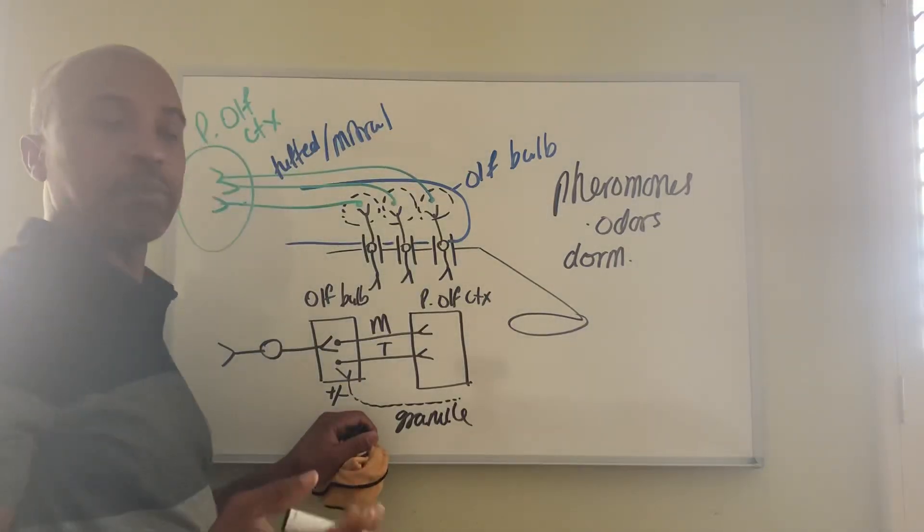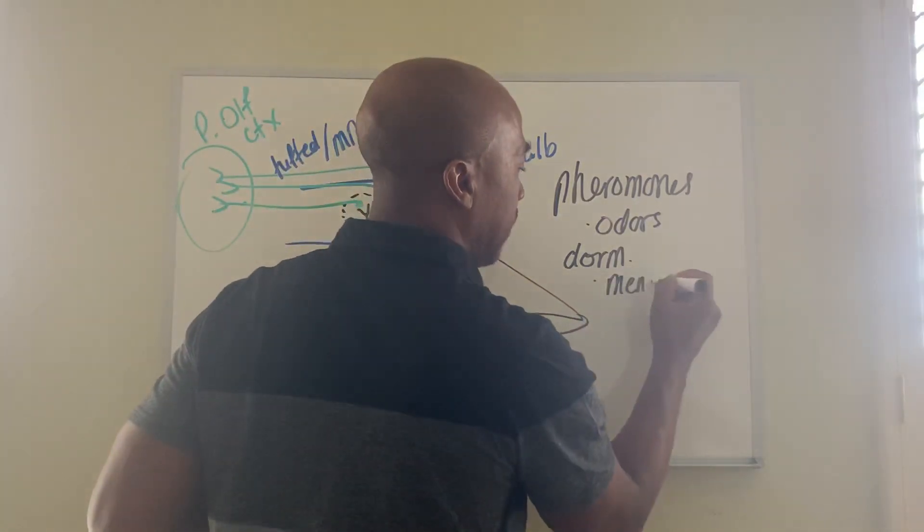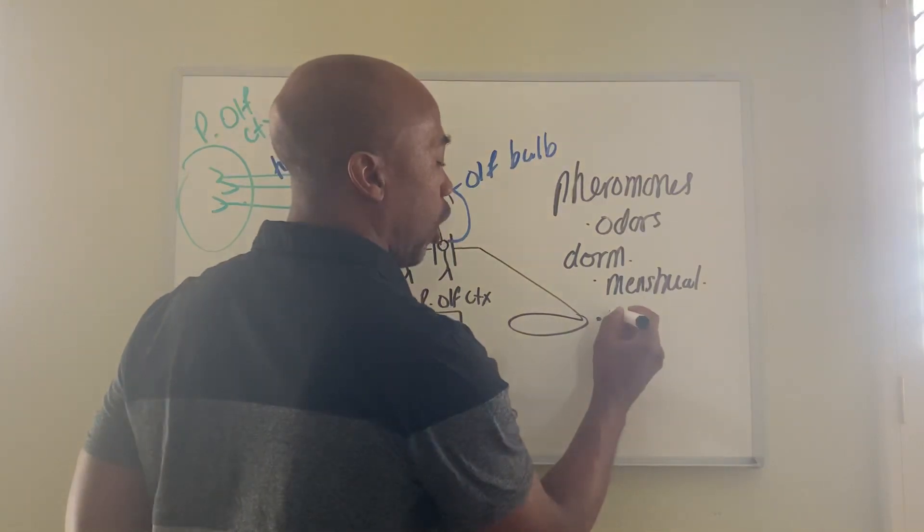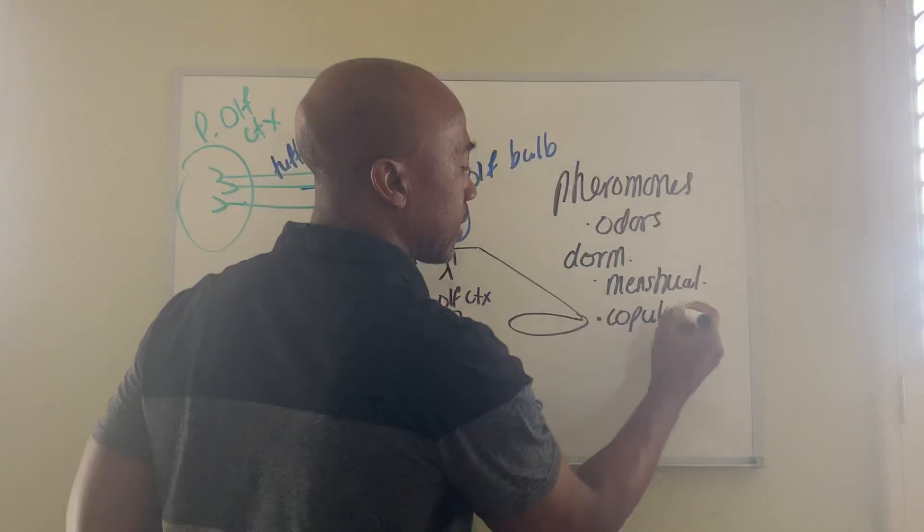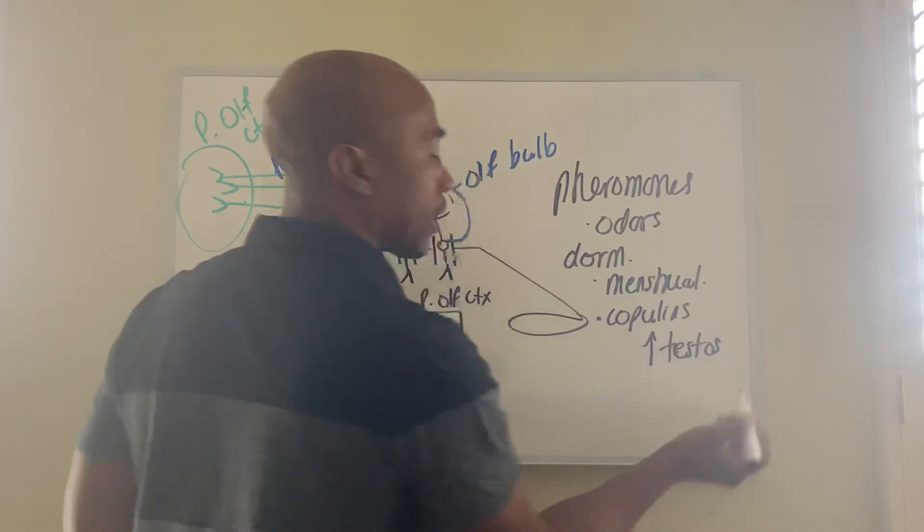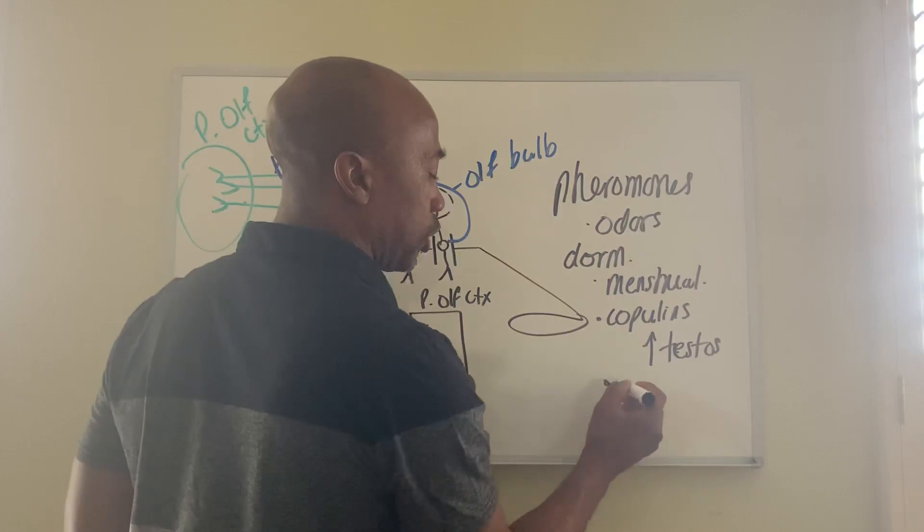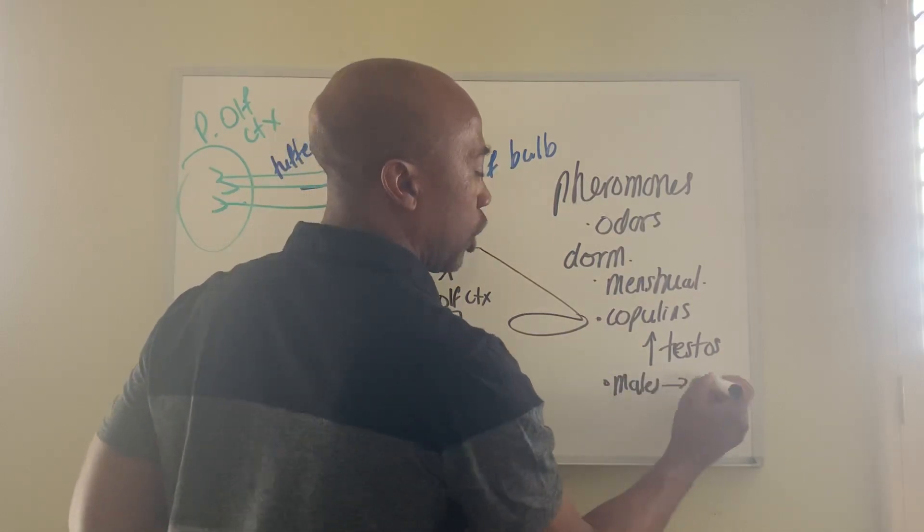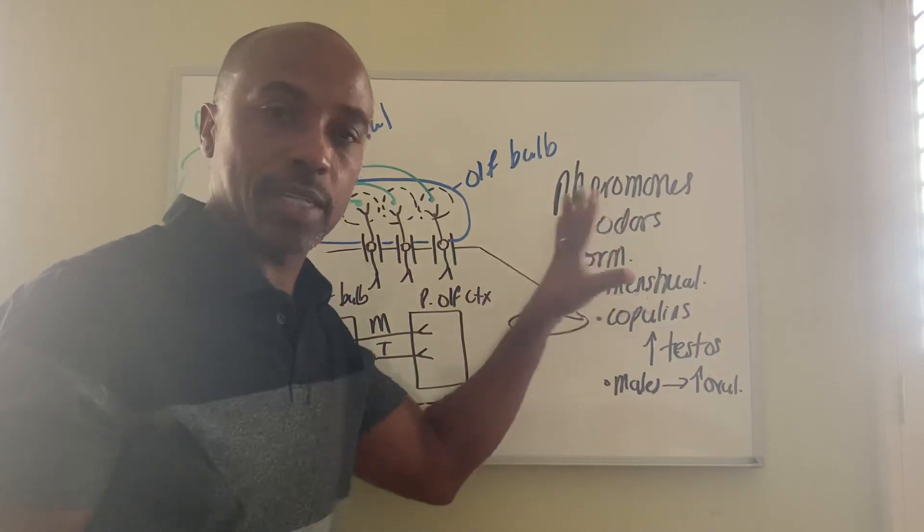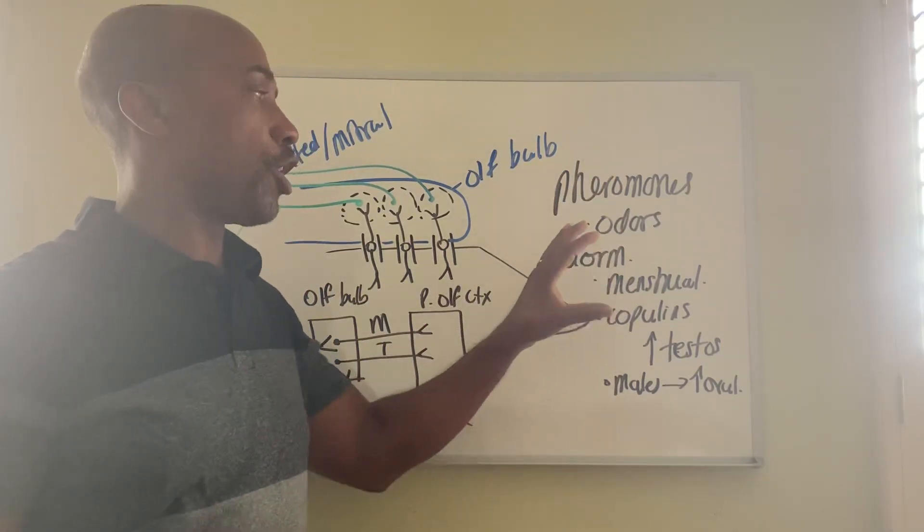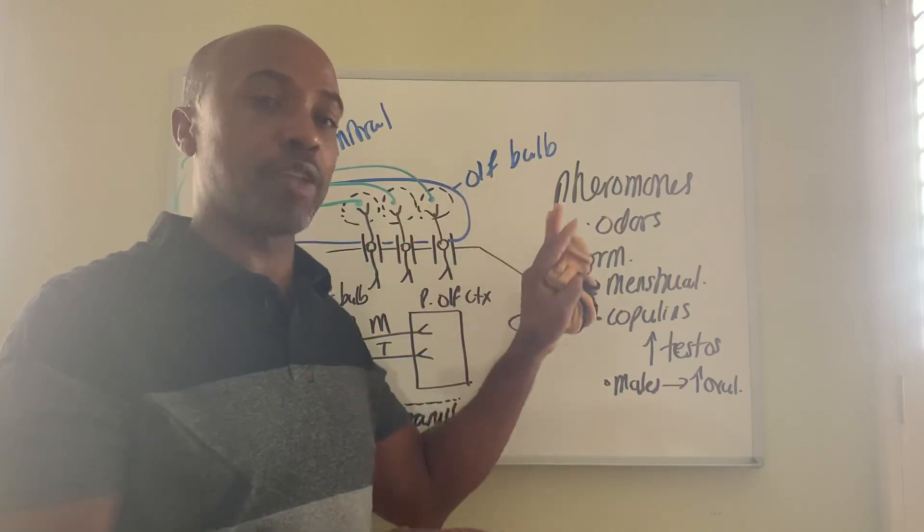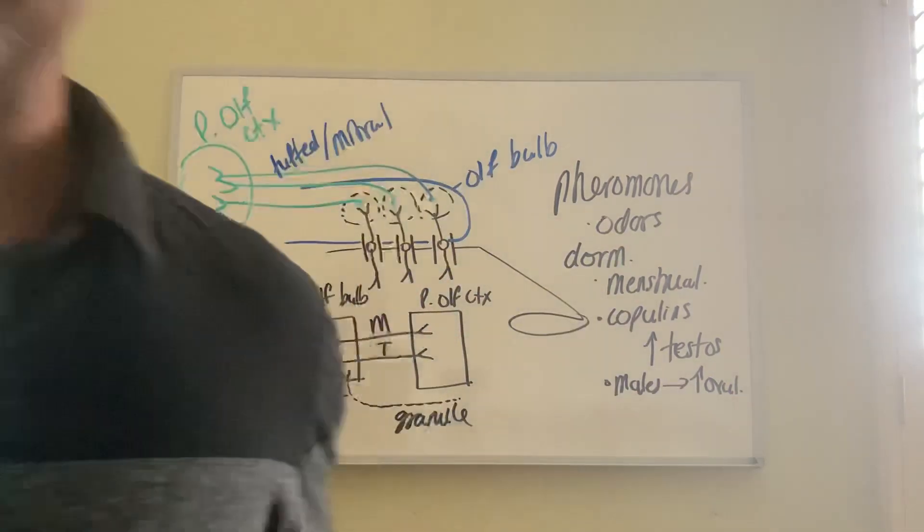Females that share the same dorm room have the same menstrual cycle, it tends to sync up, or even females in the same house. You also have cases where females release things called copulins that cause male testosterone levels to increase. You also have cases where males will trigger ovulation in females. So those are all effects that can be caused by imperceptible odors, of course, that can somehow trigger the reproductive cycles or reproductive activity of each gender to be changed based on the presence or the levels of these various pheromones.